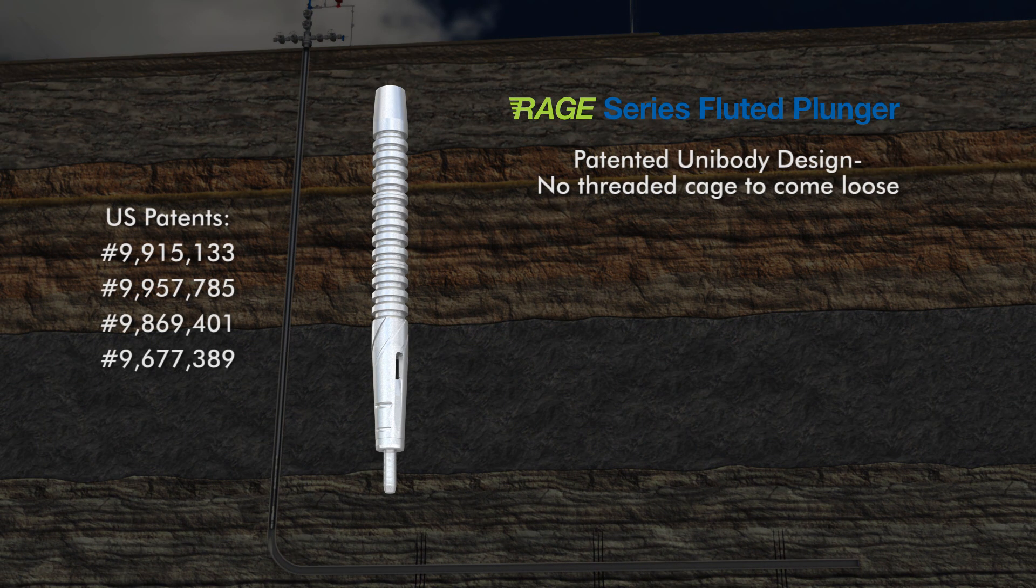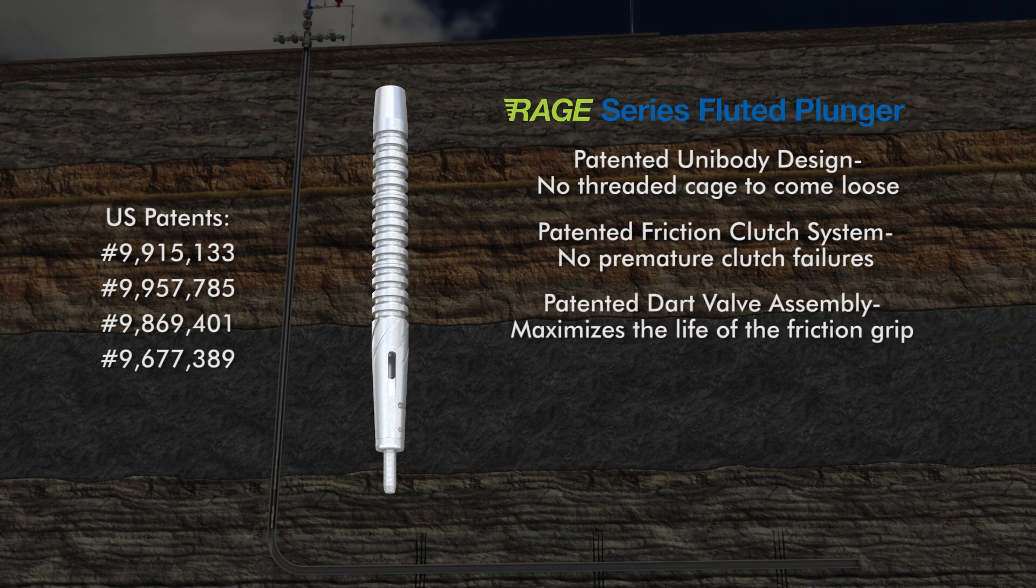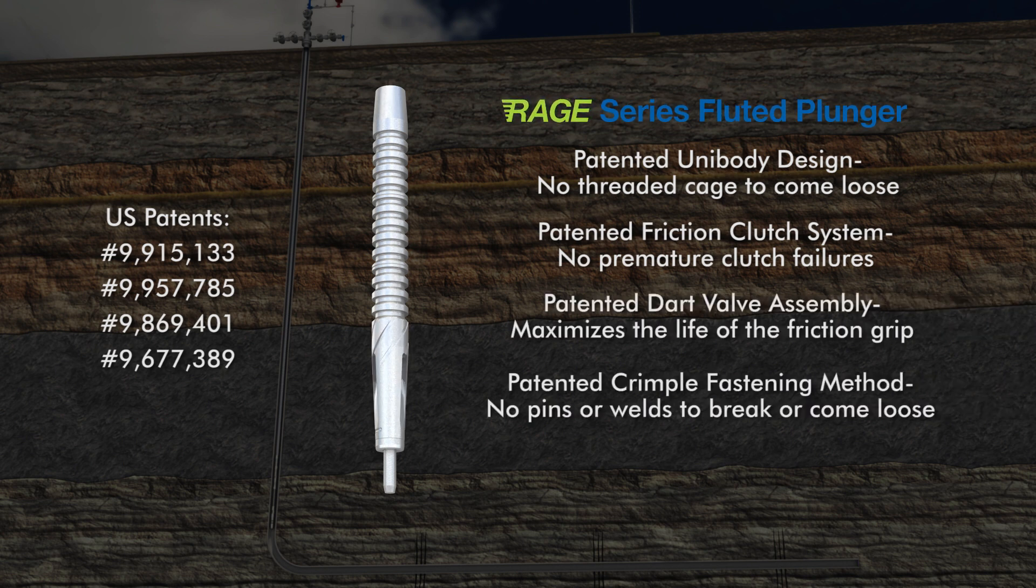During this initial installation, FlowCo will install one of their RAGE series or continuous flow bypass plungers. This will allow the well to flow while the plunger travels in the tubing string to remove fluid with minimal shut-in time.